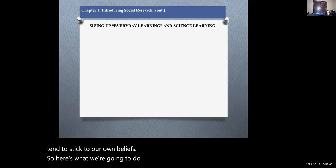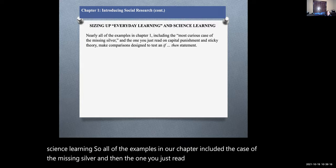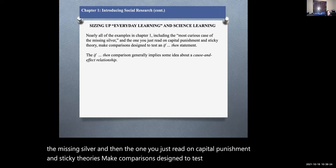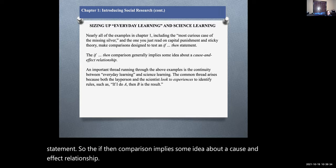Here's what we're going to do: size up our everyday learning and our science learning. All of the examples in our chapter included the case of the missing silver and the one you just read on capital punishment and sticky theories. These make comparisons designed to test the if-then statement. The if-then comparison implies some idea about a cause and effect relationship.